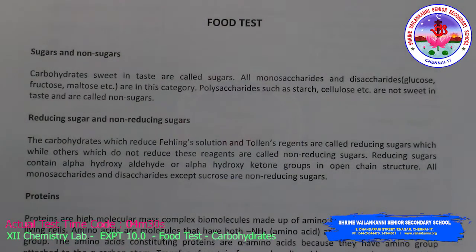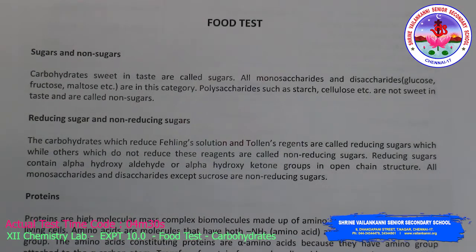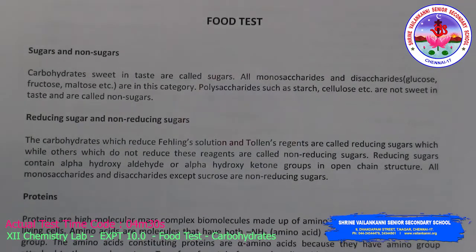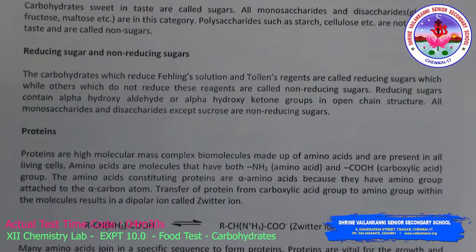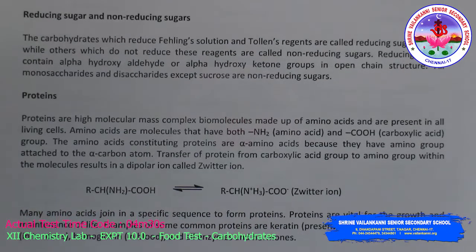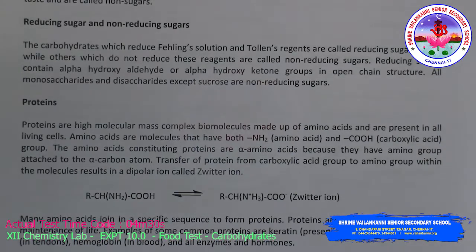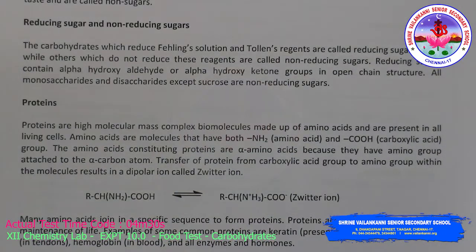Reducing sugars and non-reducing sugars: carbohydrates which reduce Fehling solution and Tollens reagent are called reducing sugars, while others which do not reduce these reagents are called non-reducing sugars. Reducing sugars contain alpha-hydroxy aldehyde or alpha-hydroxy ketone groups in open chain structure, as discussed in the biomolecules chapter. All monosaccharides and disaccharides except sucrose are reducing sugars.